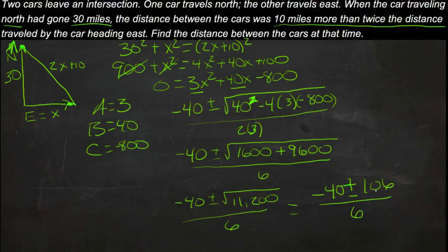Now if we had negative 40 minus 106, that would be a way negative number. And we know that our distance can't be negative. So we don't need to worry about the negative option, it's not going to work. So we'll have negative 40 plus 106, that's 66, over 6, which is 11. So 11 equals x.